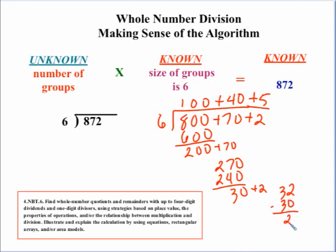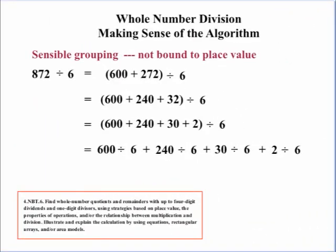So, our solution, then, if we combine all of these together, would be 145 with the remainder of 2, or written as a mixed number, 145 and 2 sixths, which, of course, we simplify to 1 third. Let's try this again, but let's use a distributive property.